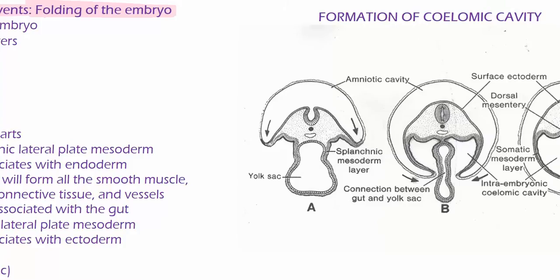Because this is a cross-section, we only see the lateral aspect of the fold occurring. We've already discussed this — you've got the amniotic cavity, which is going to cover the yolk sac. As the amniotic cavity tries to go around the yolk sac, the yolk sac is going to retract, and that yolk sac is going to become our gut tube.